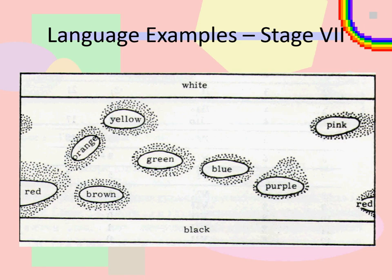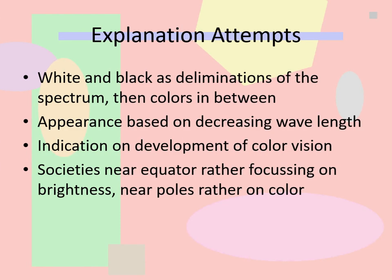And finally stage seven where there are all those four, there might be one or more of those four new color terms: pink, purple, brown and orange. Well this is not very exciting, this is what most Western languages are. So German and English they have all 11 color terms.